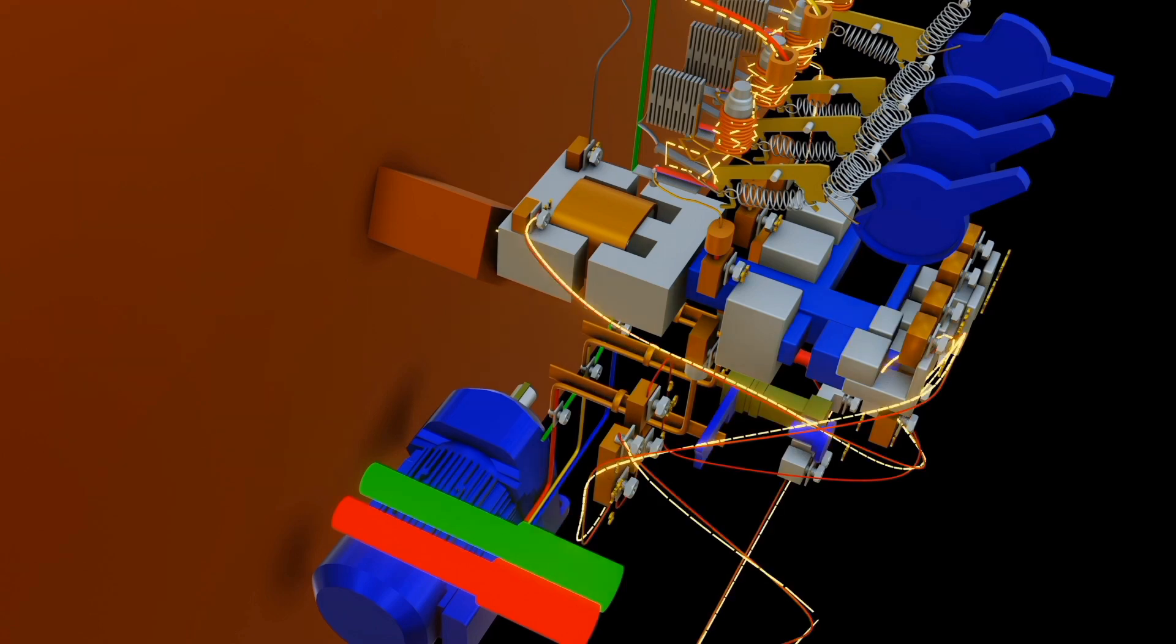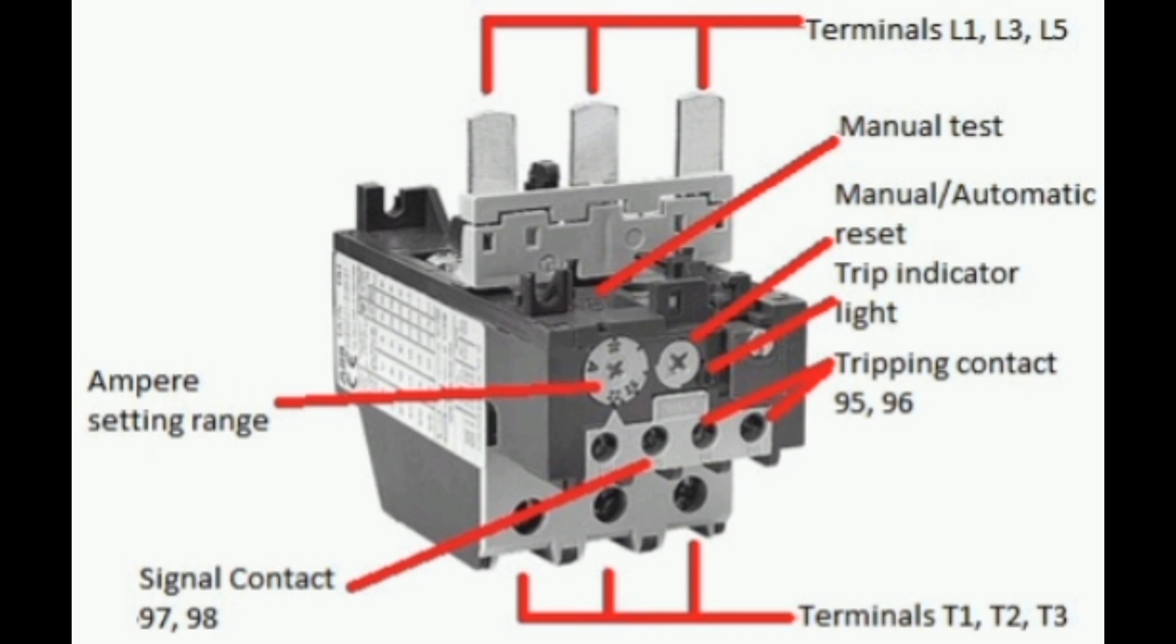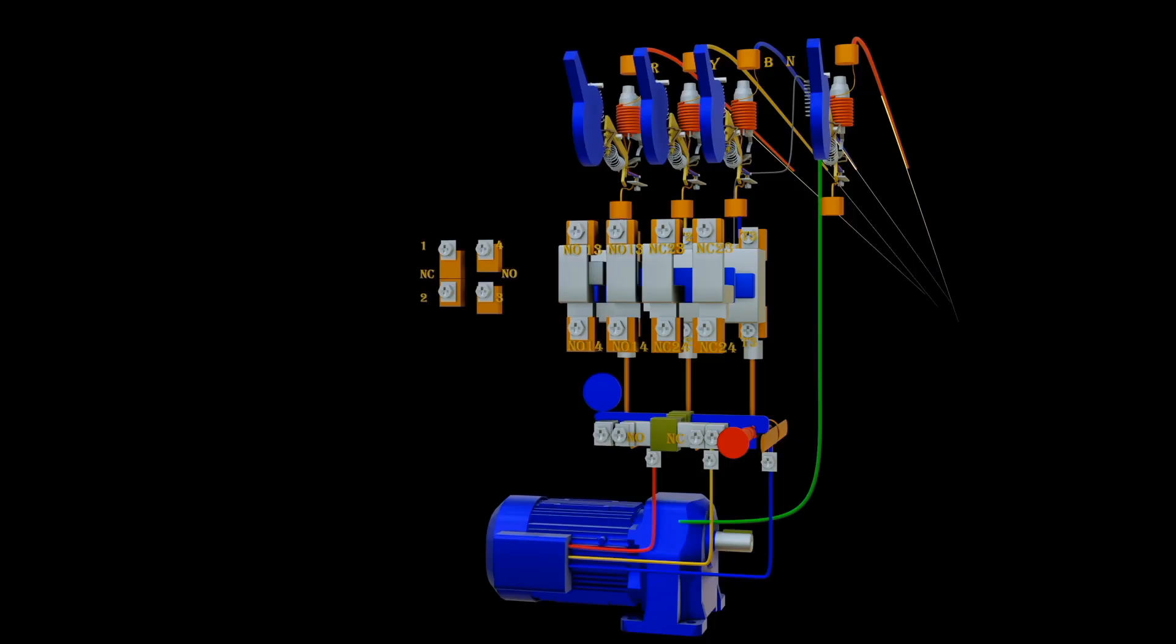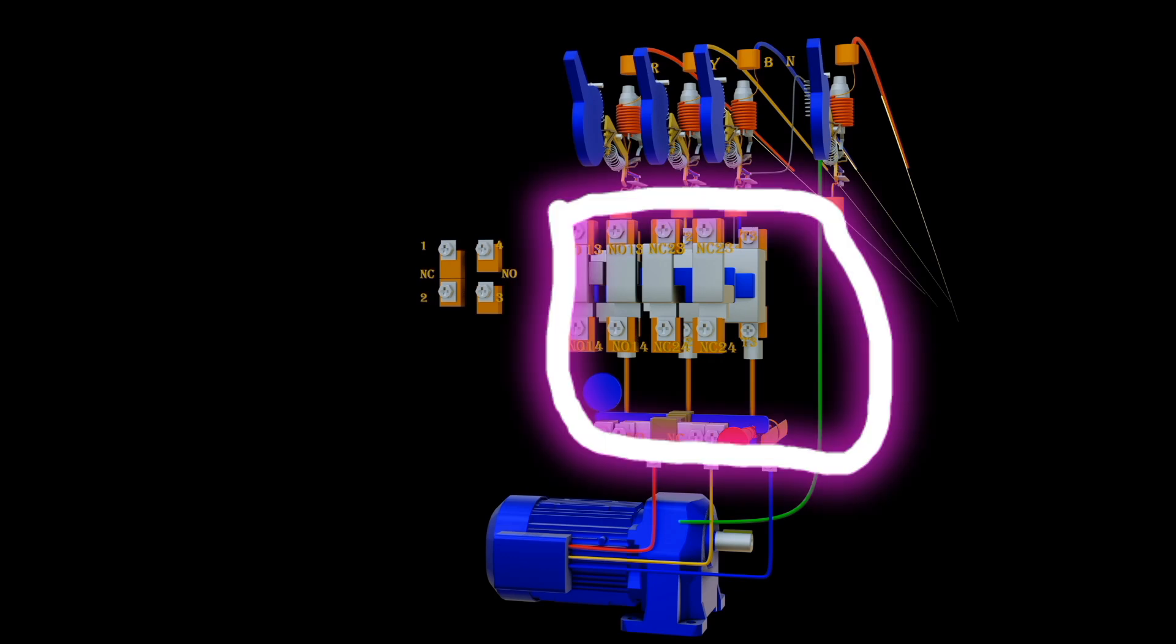Thermal overload relay can be manually or automatically reset. This depends on the application and the type of overload. Note that they are commonly used in combination with contactors to control and start motors in various industries.